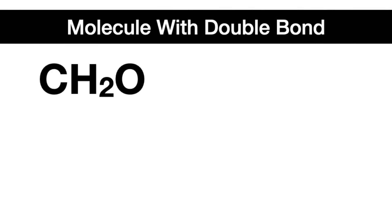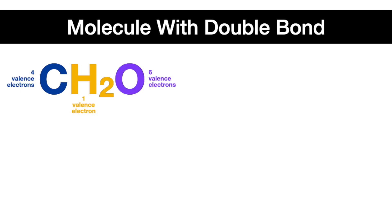Now let's draw an example with a double bond. In this molecule, we have one carbon with four valence electrons, two hydrogens each with one valence electron, and one oxygen with six valence electrons. Do notice that there's only one carbon and only one oxygen, which may make it confusing to determine which one is the central atom. Well, little hint — if carbon's in your molecule, think of carbon as being your central atom.